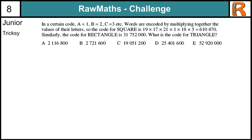Junior Tricksy from Raw Maths Challenge number 7. If you haven't had a go at this question yet, pause the video and try it now. Okay, so we've got a coded question. Each letter represents a code. A is 1, B is 2, C is 3 and so on. And then we're going to multiply the numbers, the codes for each letter to make the code for the whole word.